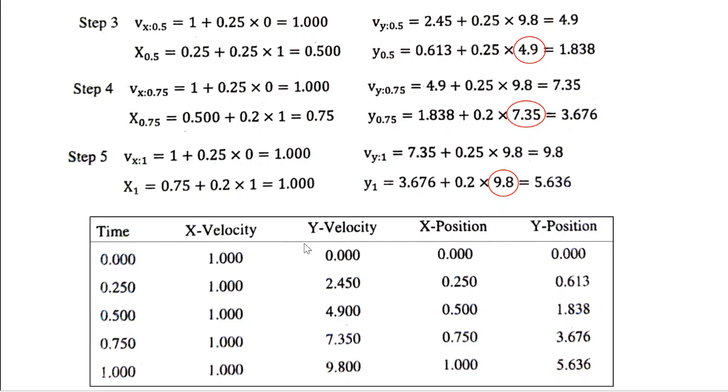Finally, you tabulate all the values: time, x velocity, y velocity, x position and y position. Here, actually you don't have to calculate x velocity because it is mentioned that the acceleration in the x direction is 0. What is the meaning of acceleration being 0? The corresponding velocity is a constant, right? Because acceleration is rate of change of velocity.